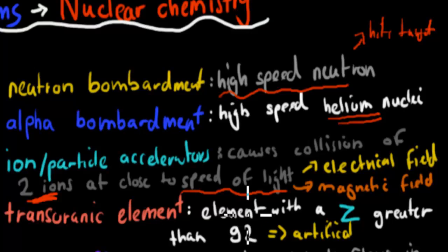Transuranic elements, these were elements with an atomic number of greater than 92. So greater than uranium. And they're all artificial, which means they're man-made.